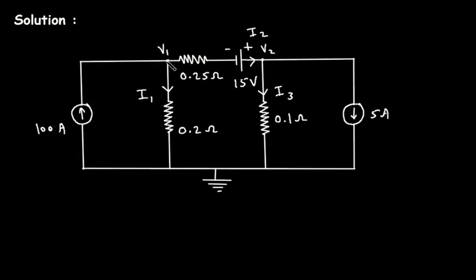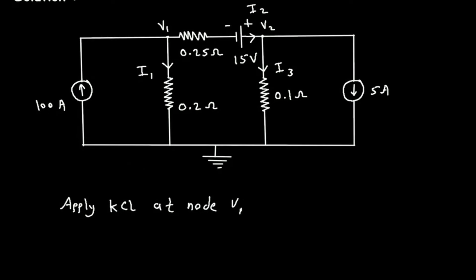Now if we apply KCL at node V1. KCL stands for Kirchhoff's current law. According to KCL, summation of all the current entering a node is equal to summation of all the current leaving the node. So here the entering current is 100 ampere, which is equal to the leaving currents I1 and I2, so I1 plus I2.